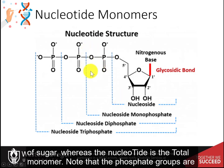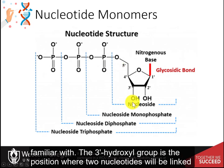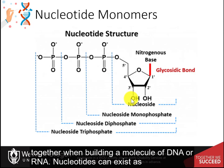Note that the phosphate groups are attached to the five prime carbon position, hence the name five prime phosphate that you might already be familiar with. The three prime hydroxyl group is the position where two nucleotides will be linked together when building a molecule of DNA or RNA.